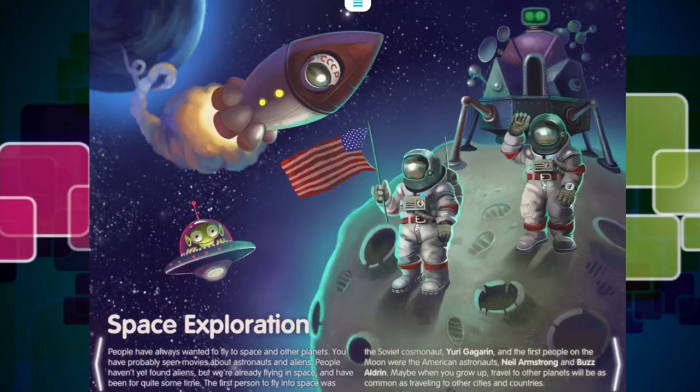People have always wanted to fly to space and other planets. You have probably seen movies about astronauts and aliens. People haven't yet found aliens, but we're already flying in space, and have been for quite some time. The first person to fly into space was the Soviet cosmonaut Yuri Gagarin. And the first people on the moon were the American astronauts Neil Armstrong and Buzz Aldrin. Maybe when you grow up, travel to other planets will be as common as traveling to other cities and countries.